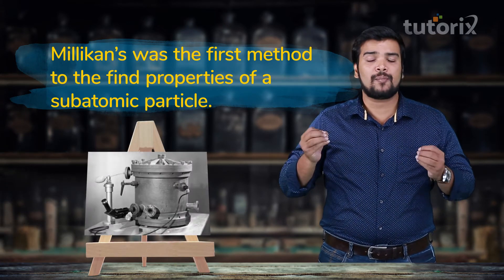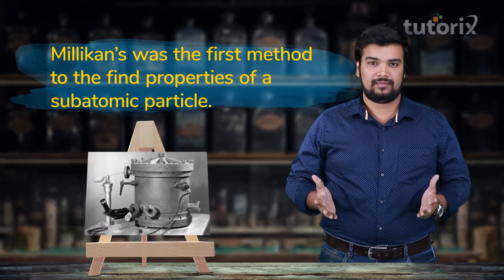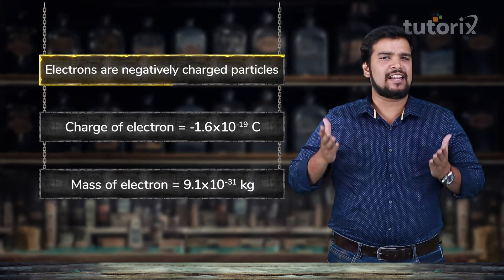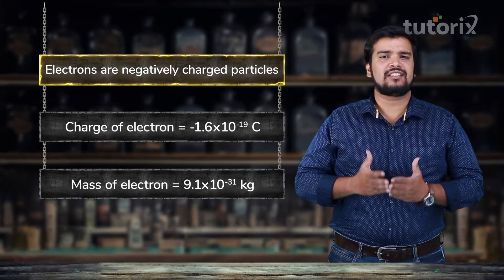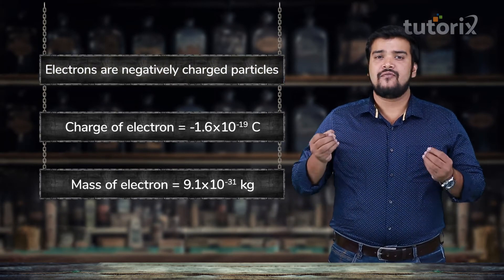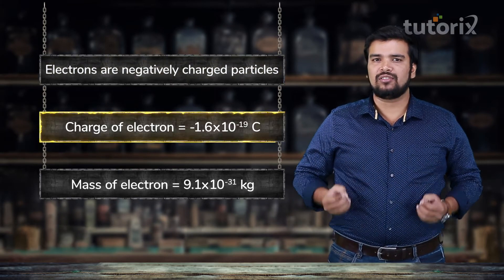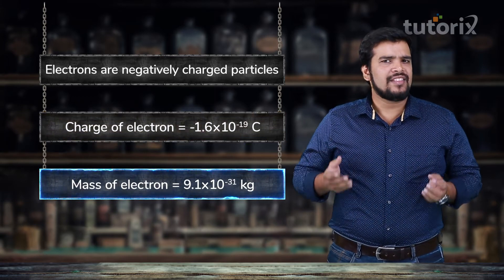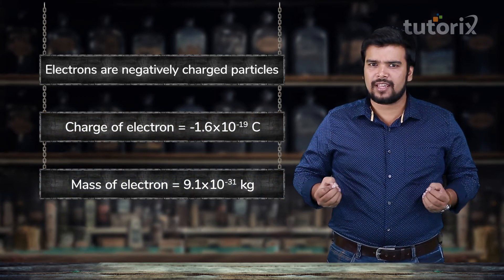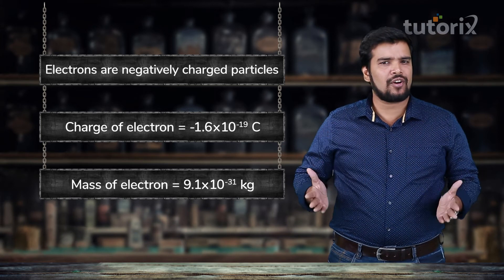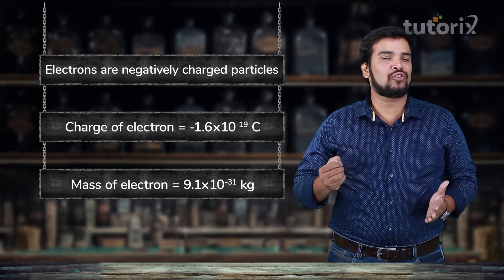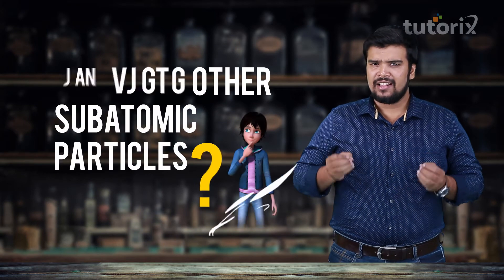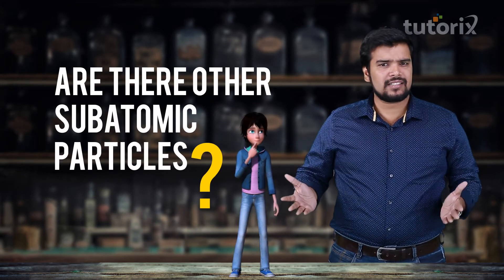Clearly, Millikan was the first person to devise a method to find out a property of a subatomic particle. So far we have learned that electrons are negatively charged subatomic particles and we have found their charge and mass. But there must be something to counter the charge of the electron, because the atom must be neutral overall — does that mean there are other subatomic particles?